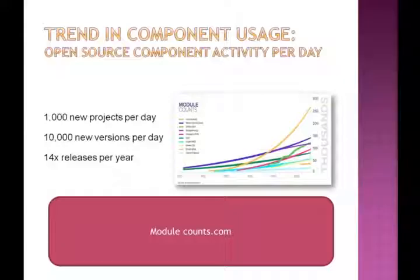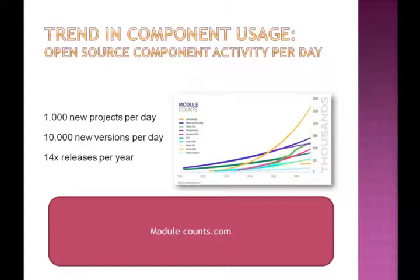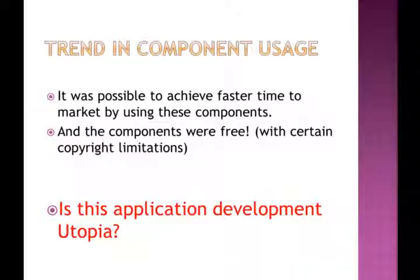There is yet another statistic from modulecount.com. Broken down, we can see there are about 1,000 new projects per day either initiated or made available for public use, 10,000 new versions per day, and 14 times the releases per year on some components. What this all means is that the development community putting out free and open source software components is very active, vigilant, and consistent about providing upgrades so that enterprise-grade applications could rely on them. So all seems really great — it is possible to achieve faster time to market and it is all standardized.